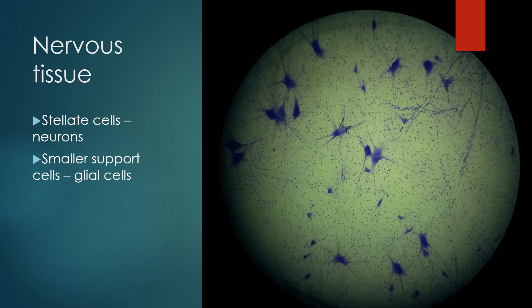These cells here with projections—those are going to be dendrites or axons of the neurons, and then the main part of the cell is known as the soma or the cell body. That would be a neuron, and then these much smaller specks that you see are going to be the glial cells, the support cells.